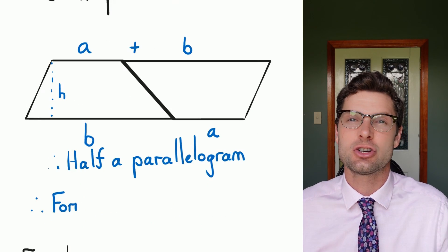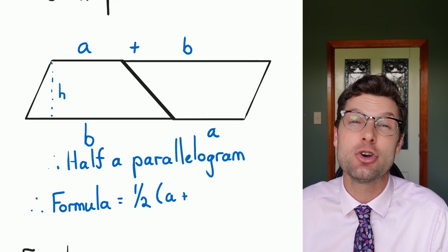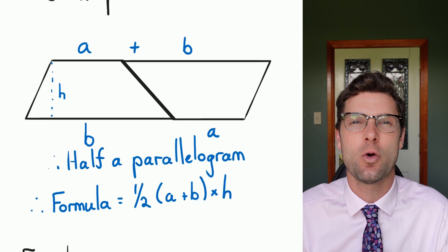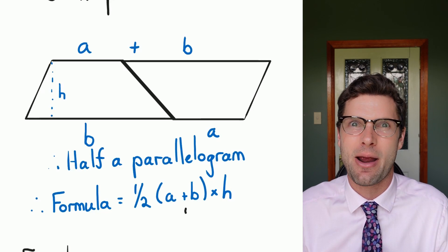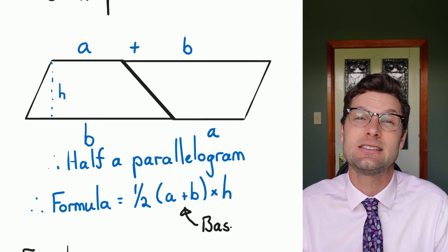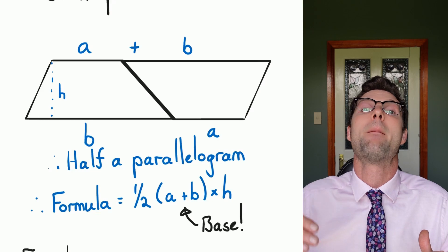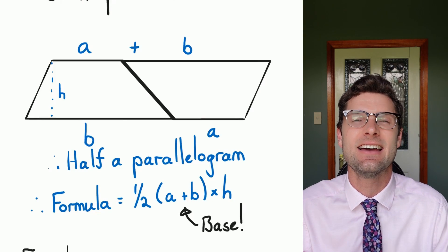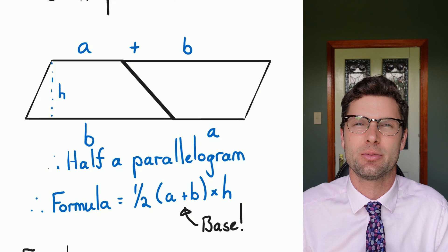So the formula is just written out a half, multiplied by A plus B, and we do have to put these in brackets just to make sure this calculation works, multiplied by the height. So again, it's just a parallelogram. It's a half times the base times the height. But the only tough thing to remember is that the base is the bottom or the B plus the top line A. So it's A plus B in those brackets, then multiplied by H.